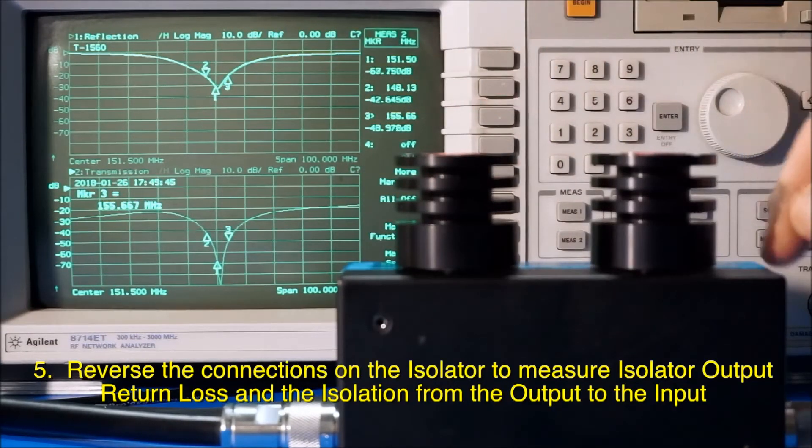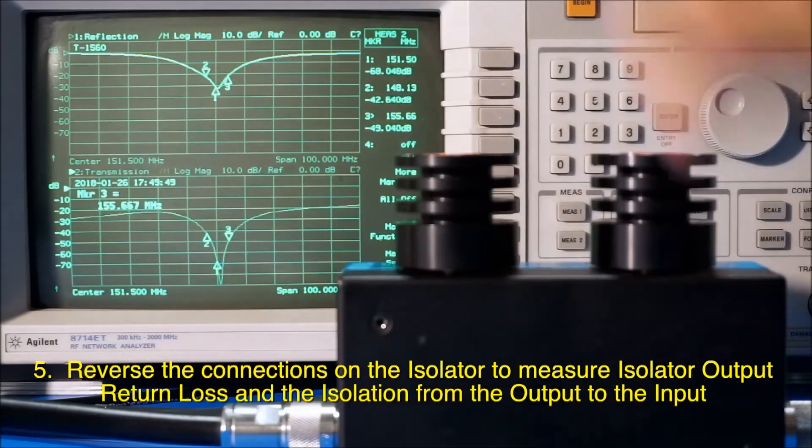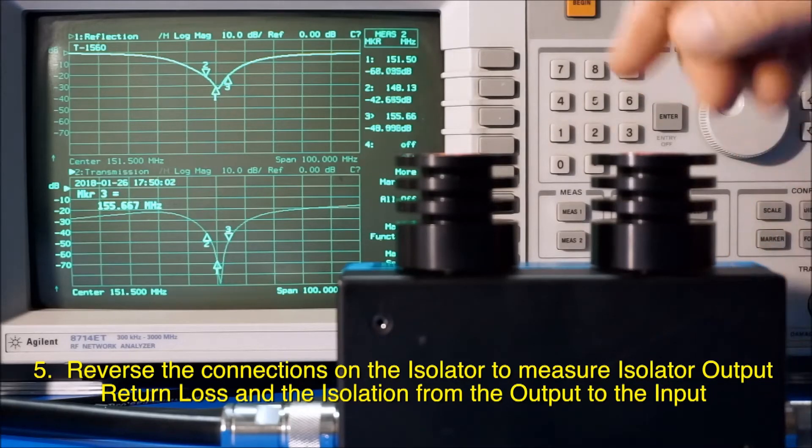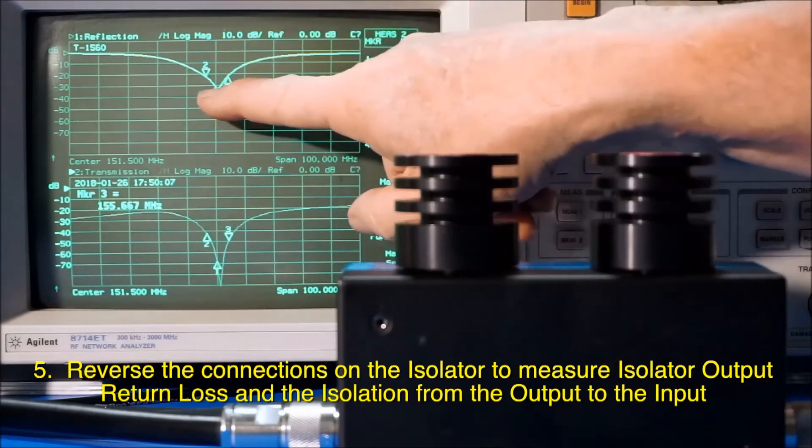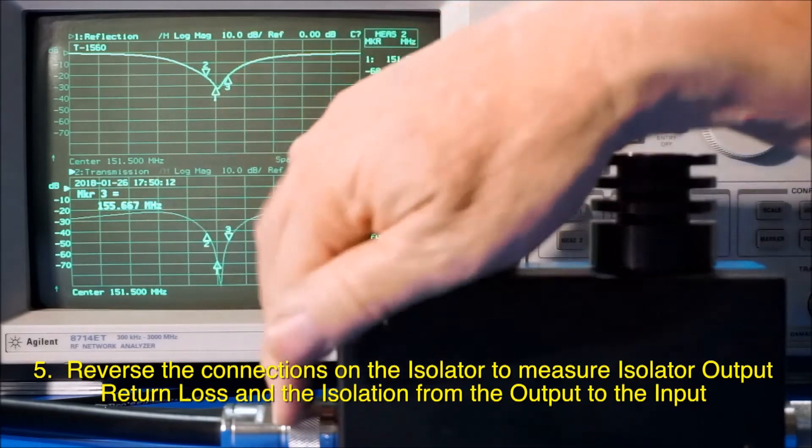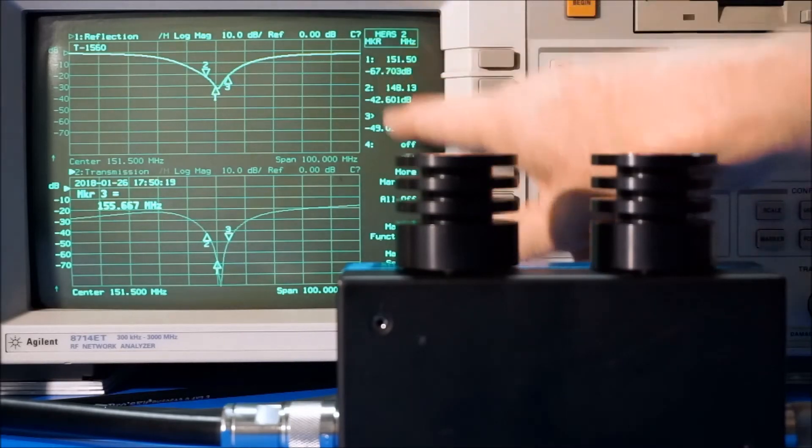Okay, I've reversed this thing so that the output is now being driven by the network analyzer and the input side is connected to the network analyzer RF input port. The curve here is showing that we're still matched. So the output side is matched well. It's 30 dB or so, and we're looking at the curve here.